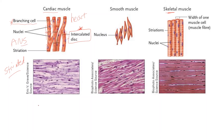Lastly, cardiac muscle is intermediate in that it contracts at an intermediate velocity. For comparison, skeletal muscles have slow twitch fibers, fast twitch fibers, and intermediate fibers, whereas cardiac muscle is all intermediate fibers. It can increase its rate and force of contraction when we exercise, but it is generally always contracting at an intermediate rate. The diameter size is intermediate as well in comparison to the other two types.